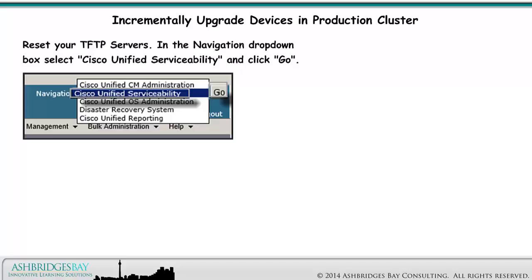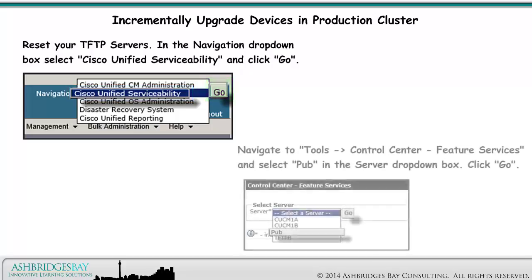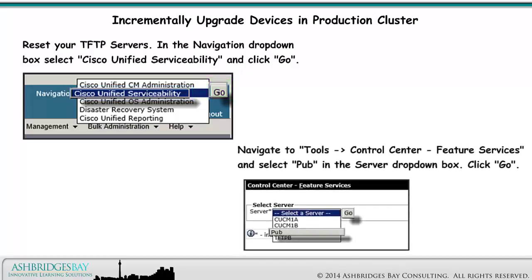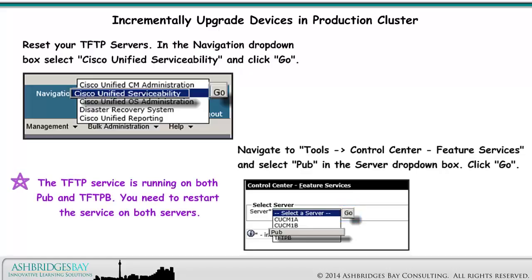Reset your TFTP servers. In the Navigation drop-down box, select Cisco Unified Serviceability and click Go. Navigate to Tools, Control Center, Feature Services, and select Pub in the Server drop-down box, then click Go. The TFTP service is running on both Pub and TFTPB — you need to restart the service on both servers.